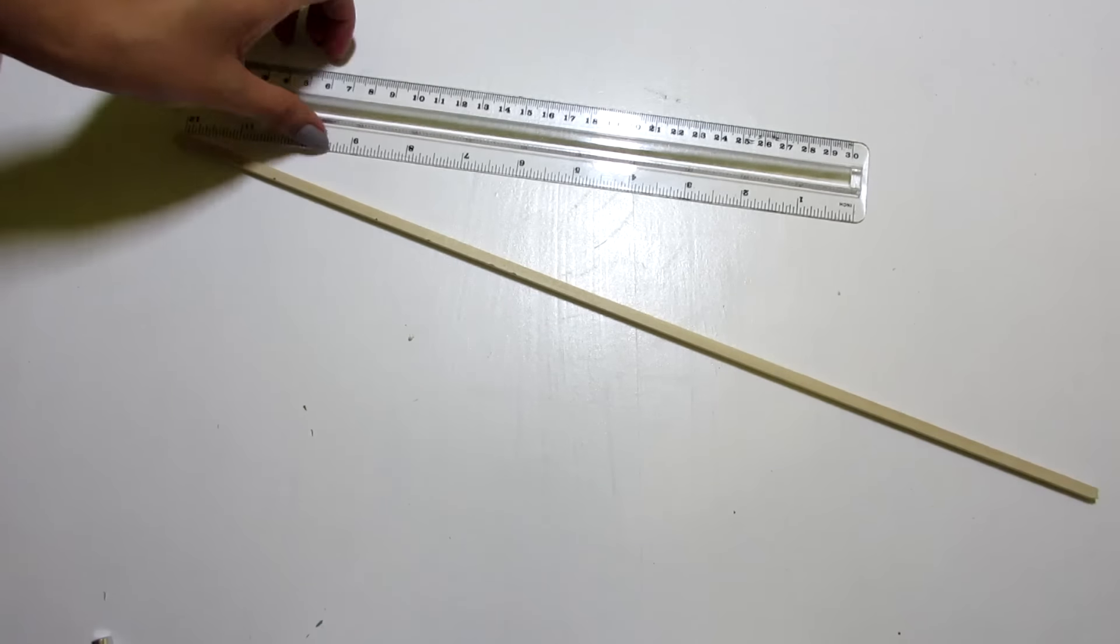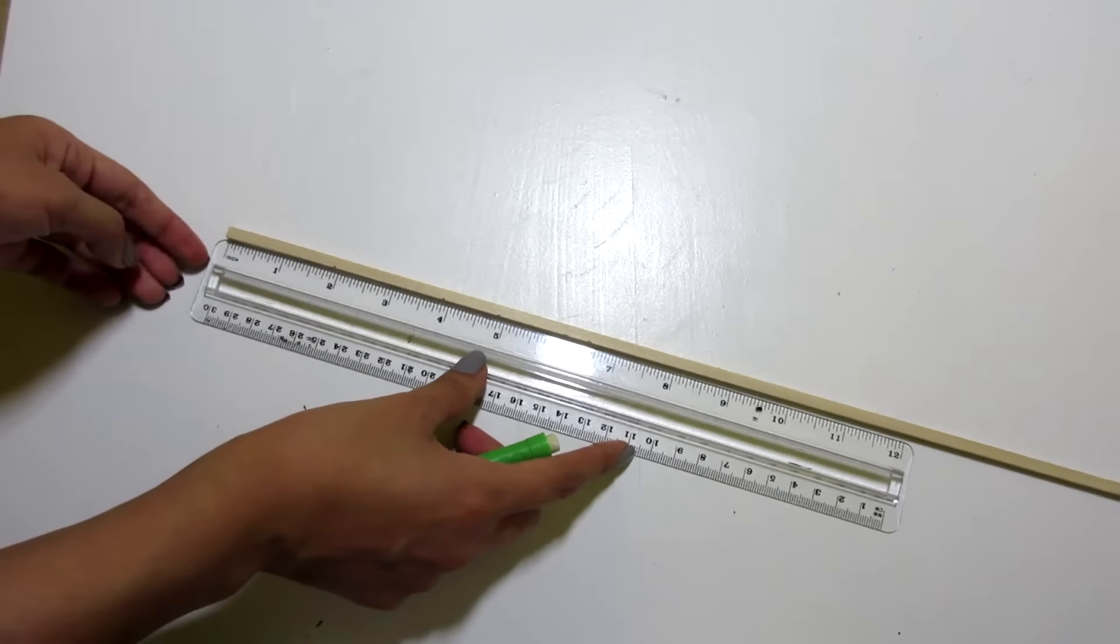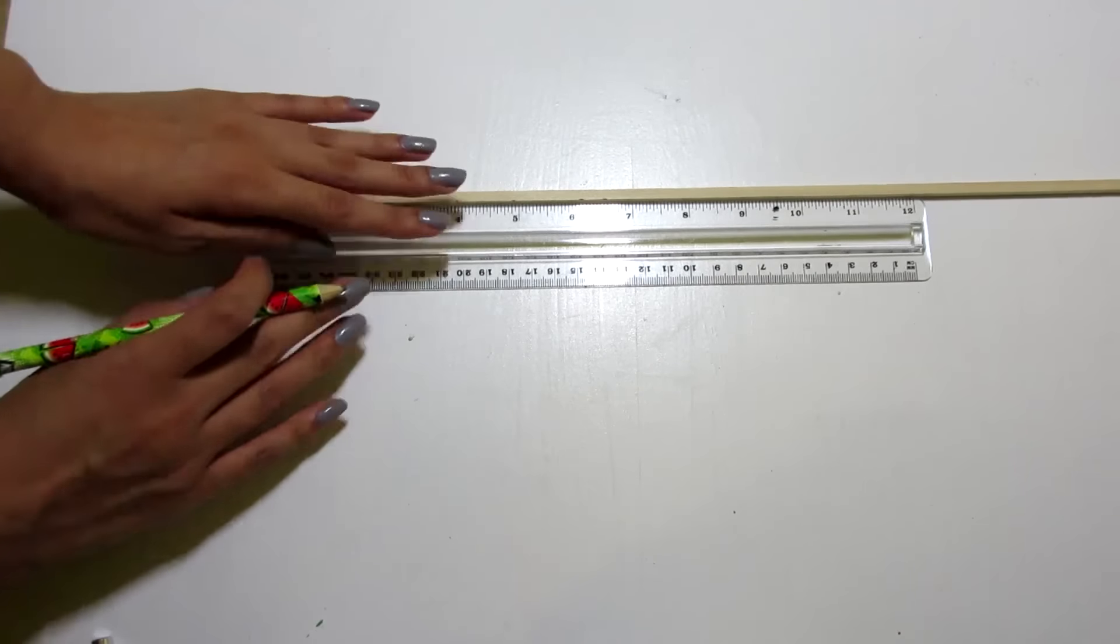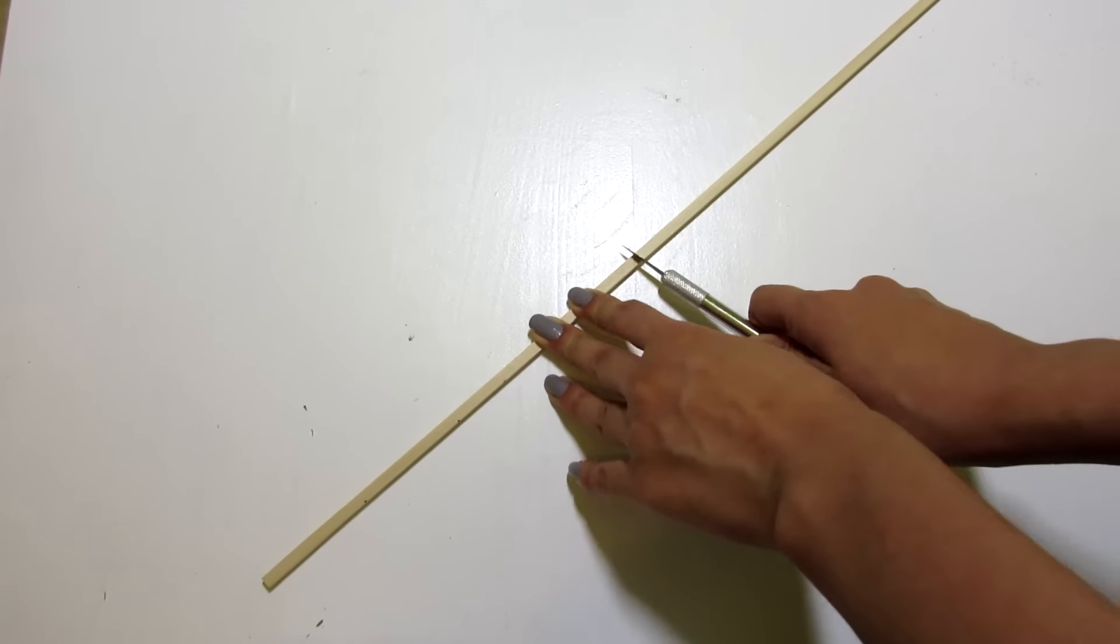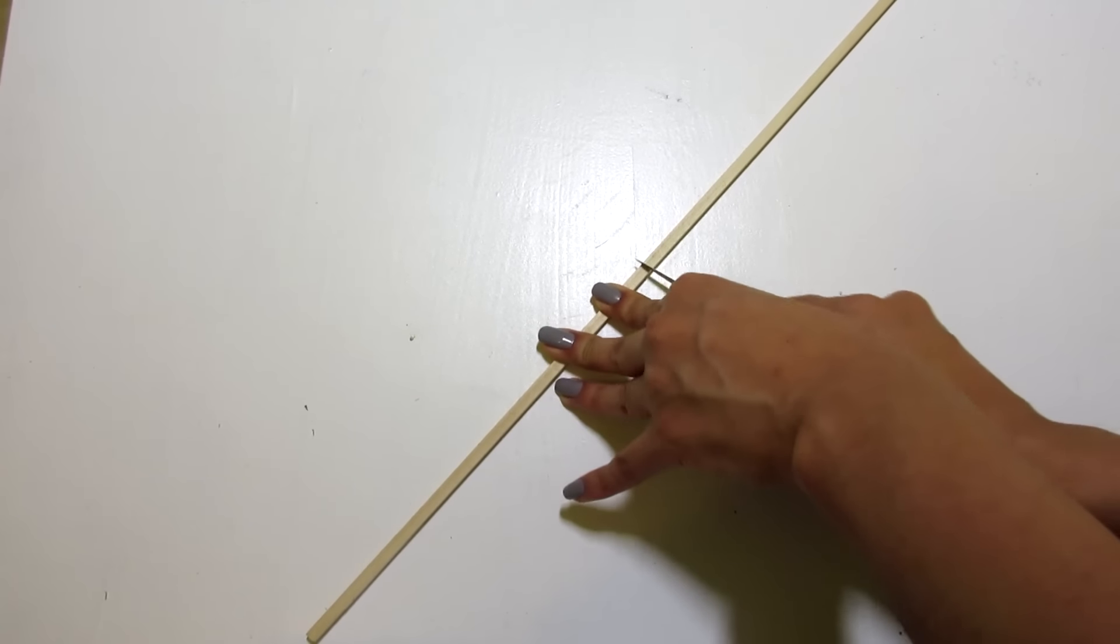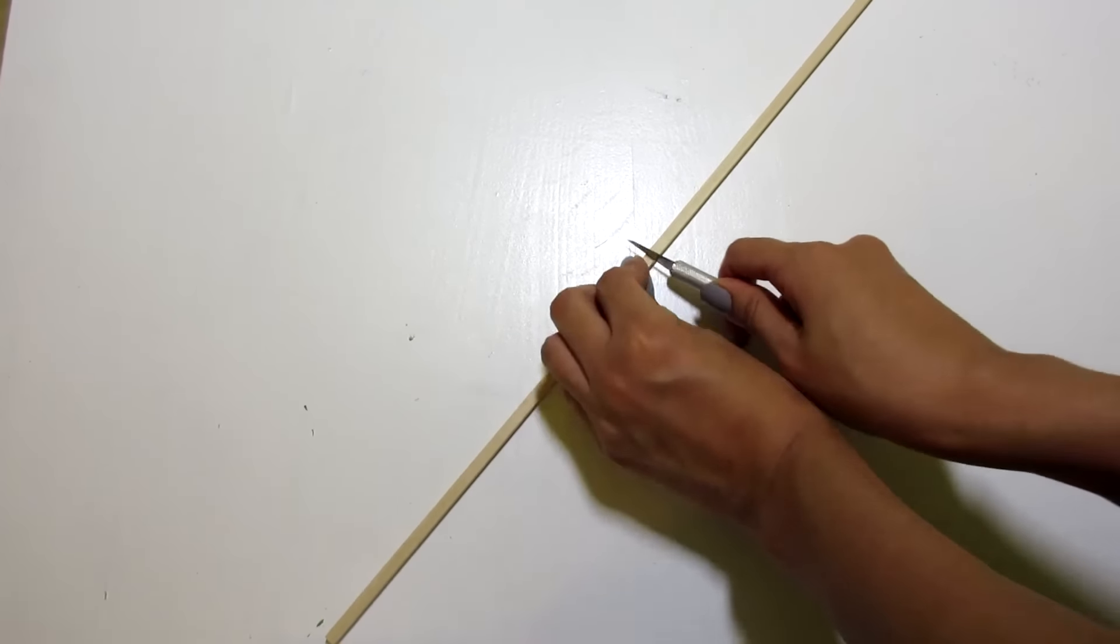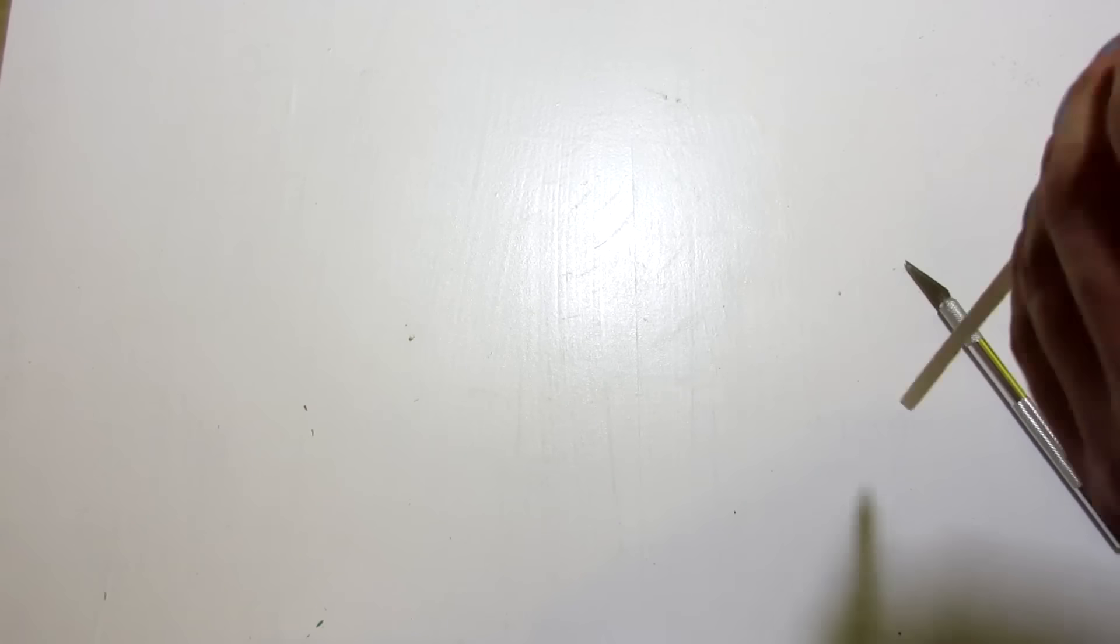While we're waiting for the banner to dry, grab your wooden strip, your ruler, and your exacto knife. What we want to do now is measure the stick so that it's 8 inches long. Once you've found your mark, go ahead and carefully cut your strip. Make sure that you ask an adult for help and that you're very careful when you're doing this.